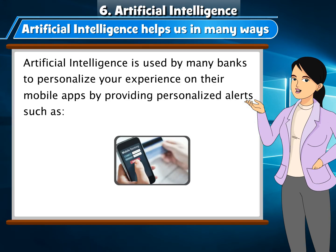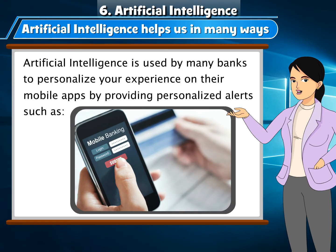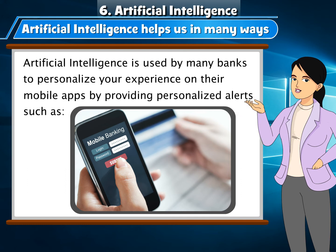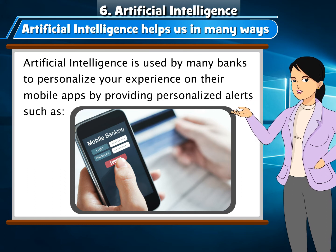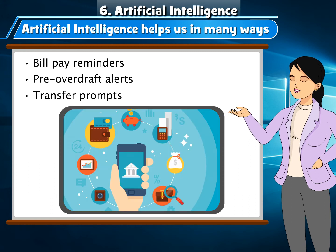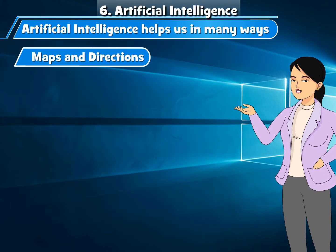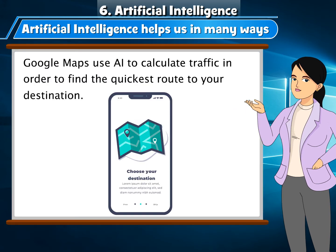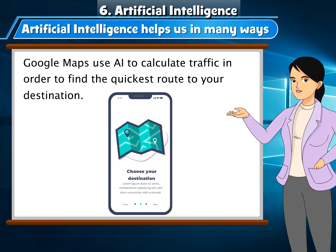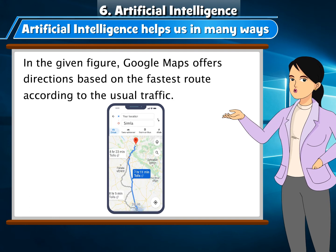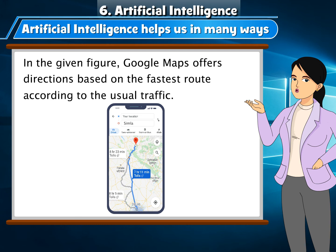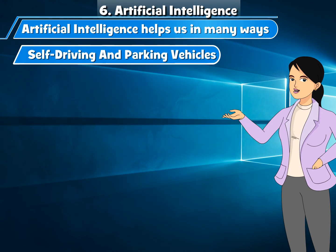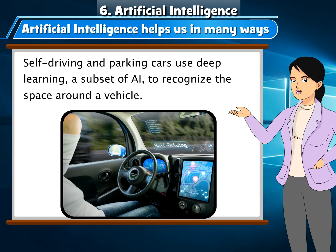Mobile Banking: Artificial Intelligence is used by many banks to personalize your experience on their mobile apps by providing personalized alerts such as bill pay reminders, pre-overdraft alerts, and transfer prompts. Maps and Directions: Google Maps uses AI to calculate traffic in order to find the quickest route to your destination, offering directions based on the fastest route according to usual traffic patterns.